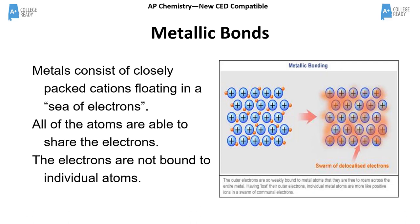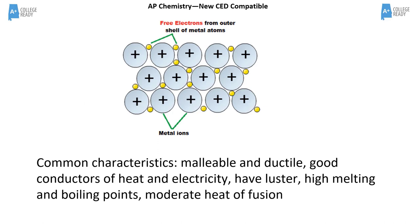That sea of electrons isn't held tightly, but it's not like it has absolutely no attraction to the nuclei — there is a force of attraction. A metal is quite strong because of those attractions between electrons and protons in the nucleus; it just has different characteristics because those electrons are loosely held and can flow around. Students need to understand the hallmarks of ionic, metallic, and covalent compounds.